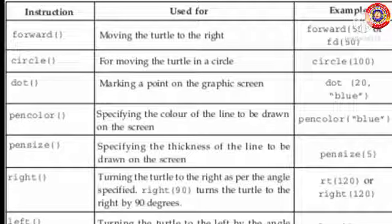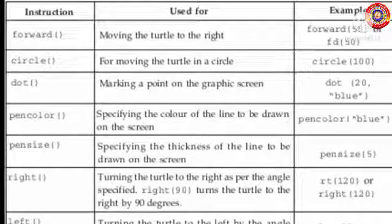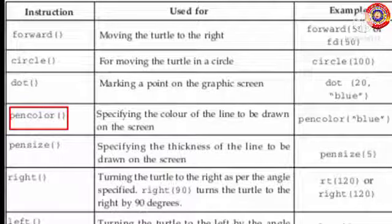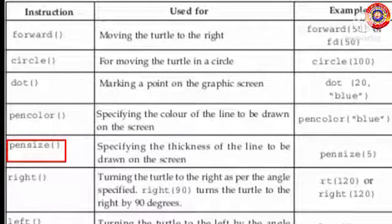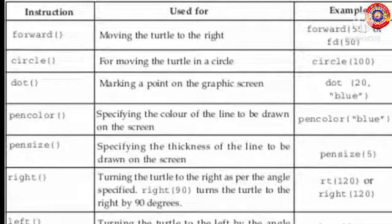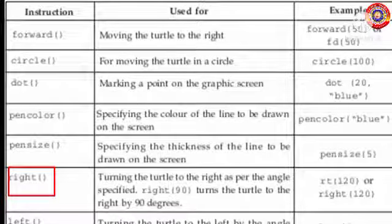In the dot command, we have the provision to give the color of the dot as well — 20 is the size of the dot in units. Next, 'pencolor' is used to specify the color of the line to be drawn on the screen. Example: pencolor('blue'). Then 'pensize' is used to specify the thickness of the line to be drawn. Example: pensize(5).